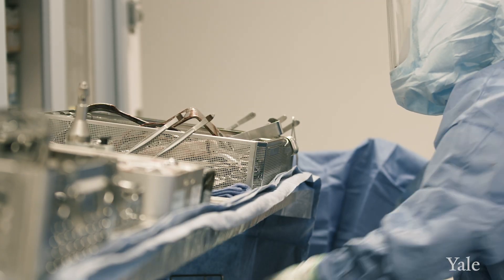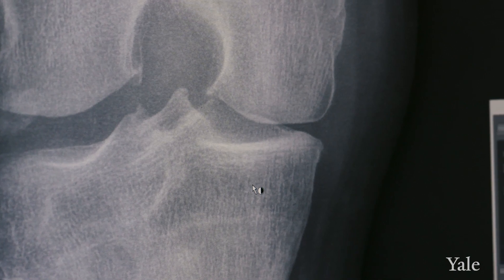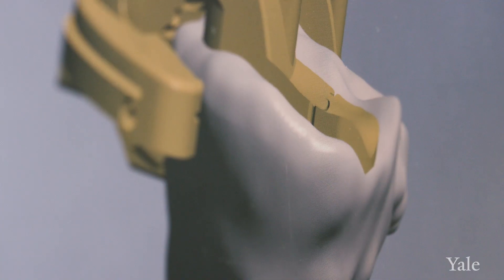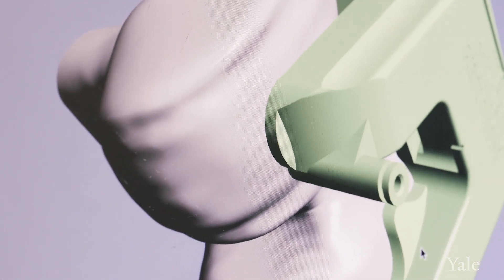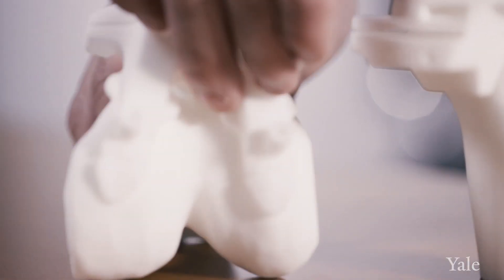Total joint replacement is when we replace the surfaces where the cartilage has been broken down or worn out, and we replace it with metal, plastic, or ceramic surfaces.